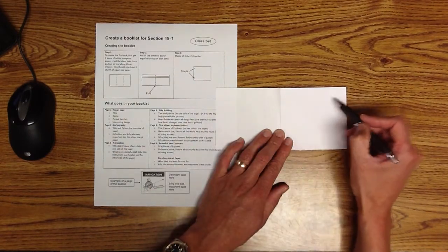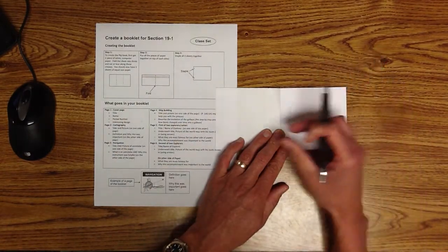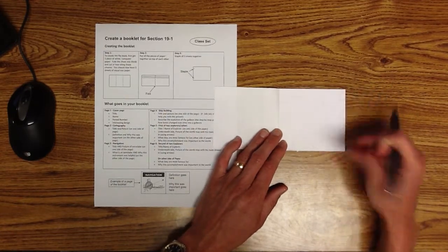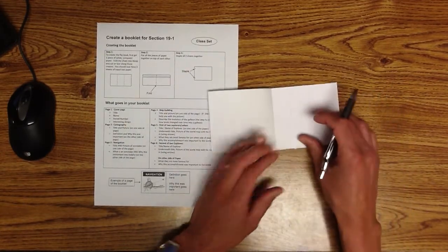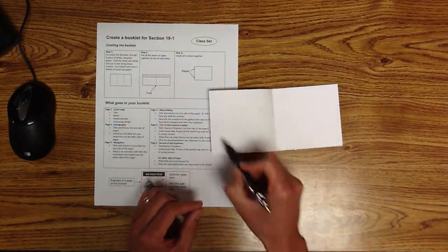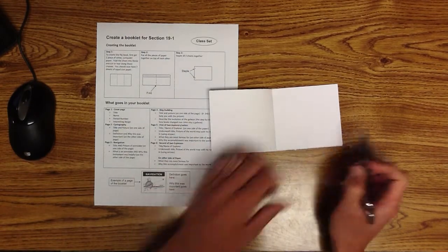Then on this side is where you're going to put your information. It says you need a definition of what cartography is, and then you need why this was important to these great explorers of the world. And so for page two, it's the whole thing. You've got your title over here, your picture over here, and you've got your writing information over here.